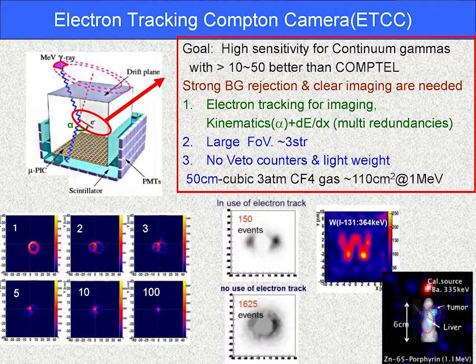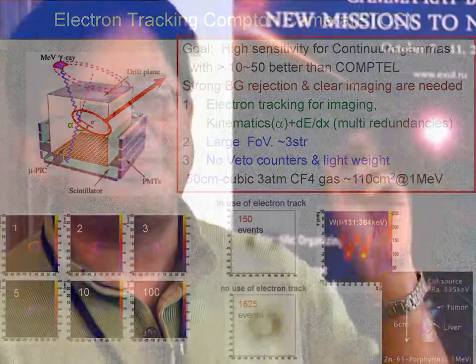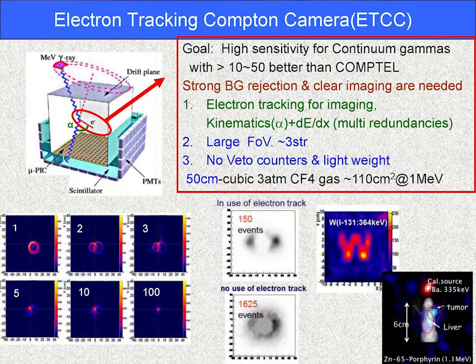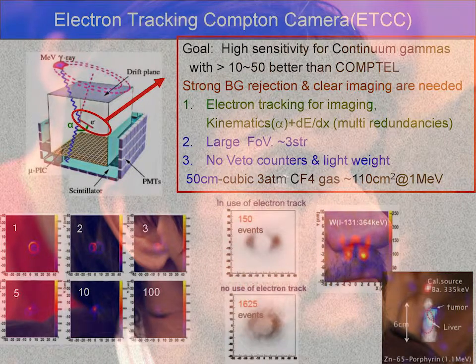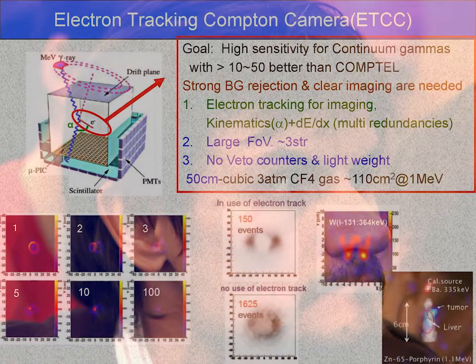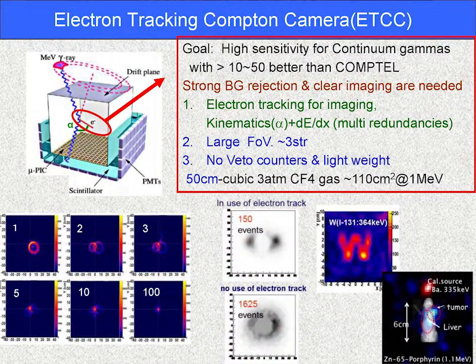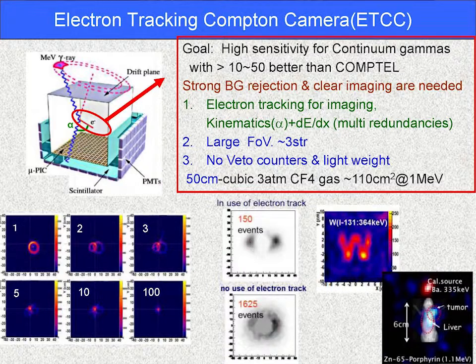A time-projection chamber is a quite common technique used in collider experiments to measure the 3D trajectory of charged particles. By measuring the direction of electrons, we can limit the direction of gamma rays to arcs rather than full circles. Also, by measuring the energy loss rate, we can perform particle identification — which is quite important for rejection of neutrons. In the atmosphere there are many neutrons generated, and these are a significant background.